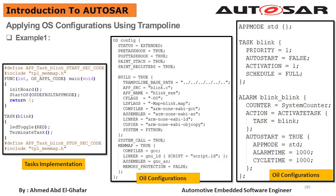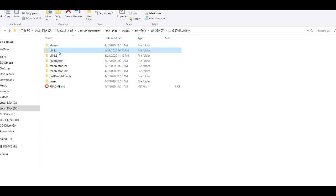Our alarm is autostarted with reference to the standard default application mode. The alarm time and cycle time are one second, which is 1000 ticks. So after one second the alarm will expire, because the system counter tick is one millisecond, and every one second the alarm will expire again. At the middle is our OS configuration — here we make it extended. We enable the pre-task hook and the post-task hook, and the application name which is Blink.c, and our ARM GCC compiler which we installed previously. There are many more configurations which you can read from the manual of the Trampoline operating system.